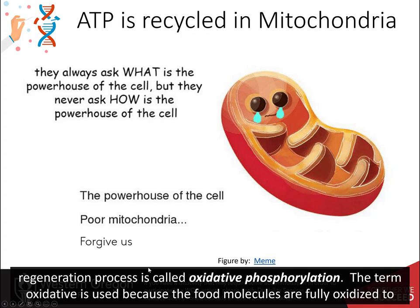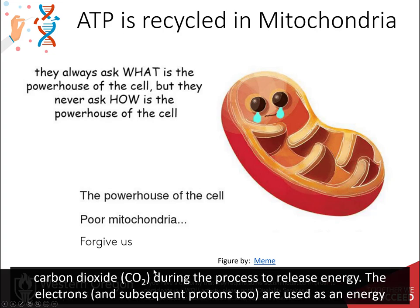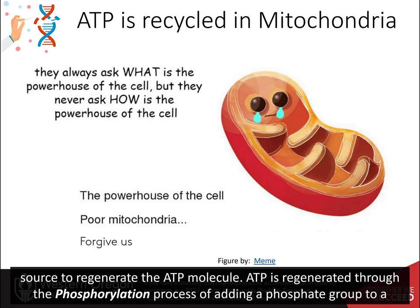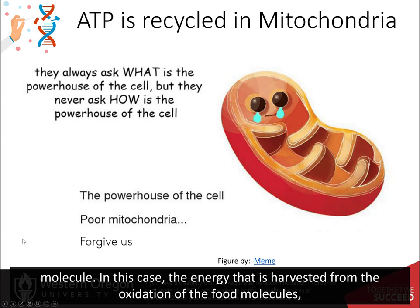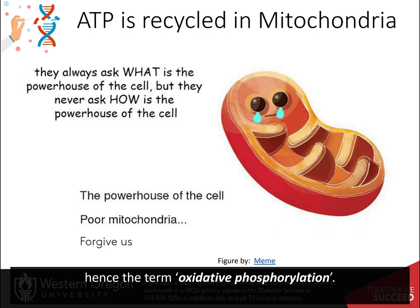This regeneration process is called oxidative phosphorylation. The term 'oxidative' is used because food molecules are fully oxidized to carbon dioxide during the process to release energy. The electrons and subsequent protons are used as an energy source to regenerate ATP through the phosphorylation process of adding a phosphate group — using the energy harvested from the oxidation of food molecules, hence the term oxidative phosphorylation.